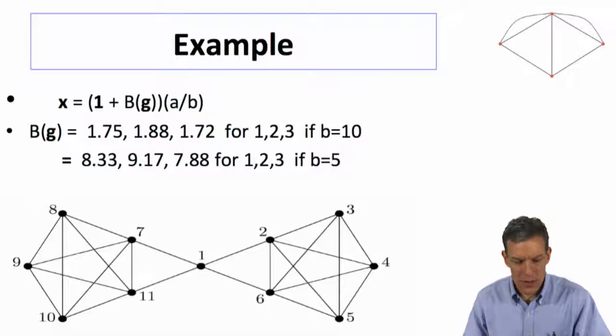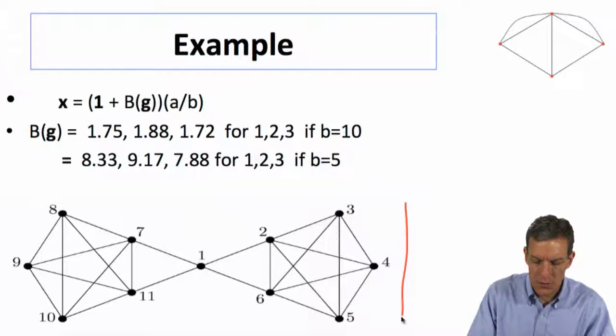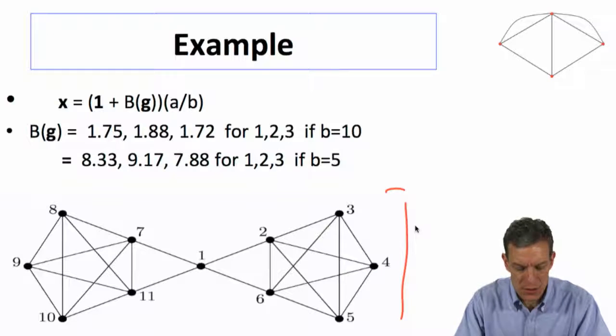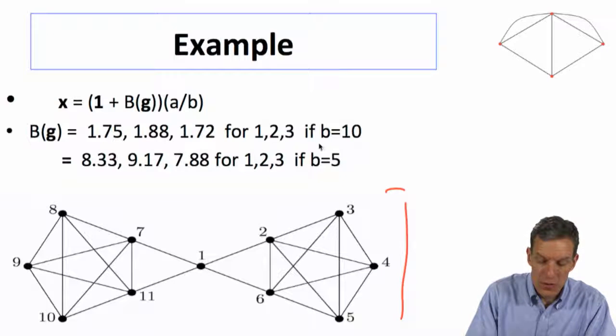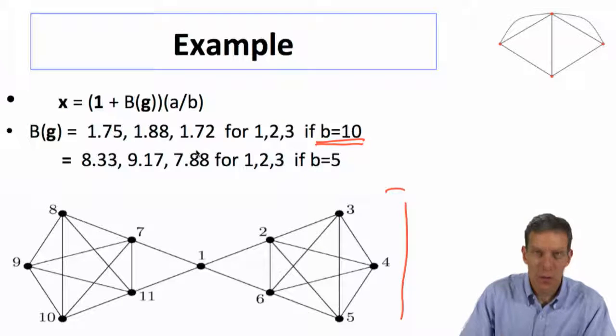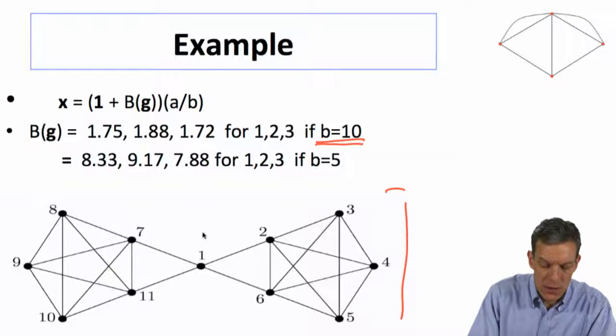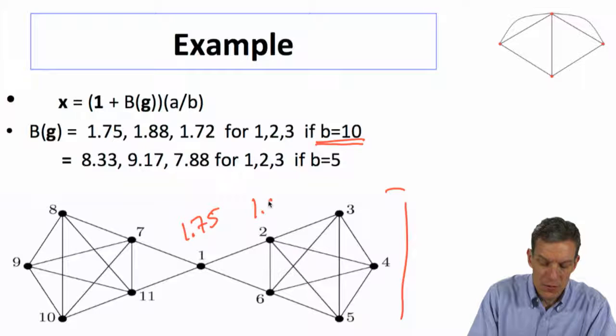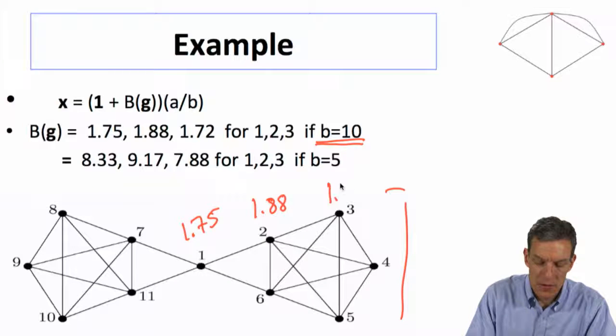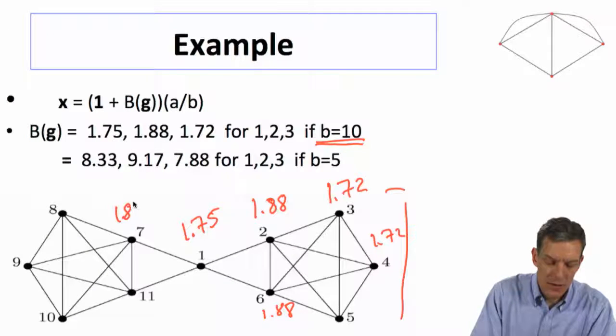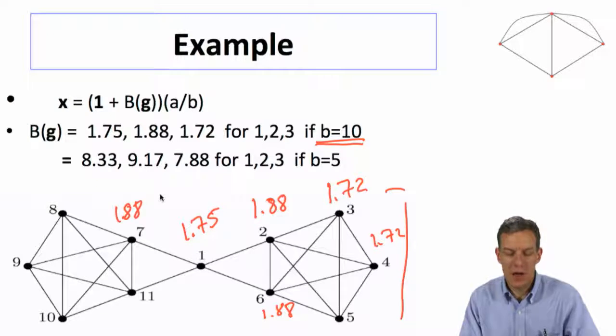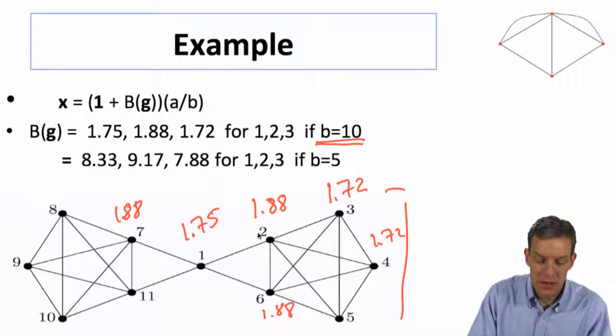So, for instance, if we do that calculation, you can do that calculation here on one network for which they did these calculations. You can do it in different settings. So depending on what b is, if b is 10, that's sort of relatively high cost to taking actions. Then what do you get? You get that a person in the center position takes an action of 1.75. This person takes an action of 1.88. This takes 1.72. These people are all, right, this is going to be 1.72, 1.88, 1.88. So depending on how many neighbors you have and how central you are, in this case, the highest action ends up being for these individuals in this position.